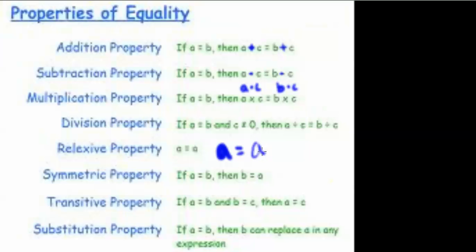The reflexive property: a equals a. The symmetric property: if a equals b, then b equals a. The transitive property: if a equals b and b equals c, then a equals c.